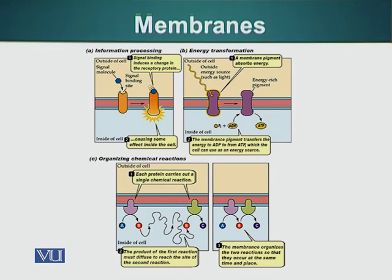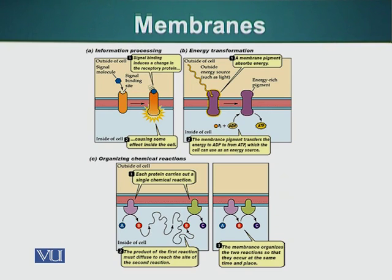Membranes also have enzymes — special proteins — and these membranes increase the surface area on which these enzyme proteins can be embedded, thereby providing a greater surface area for different types of reactions. Not only do membranes provide greater surface area, they can also organize these enzyme proteins in a sequence. In metabolism, the end product of one chemical reaction is the starting point for another, so enzymes organized on a membrane scaffold allow these reactions to proceed sequentially in a much smoother way.